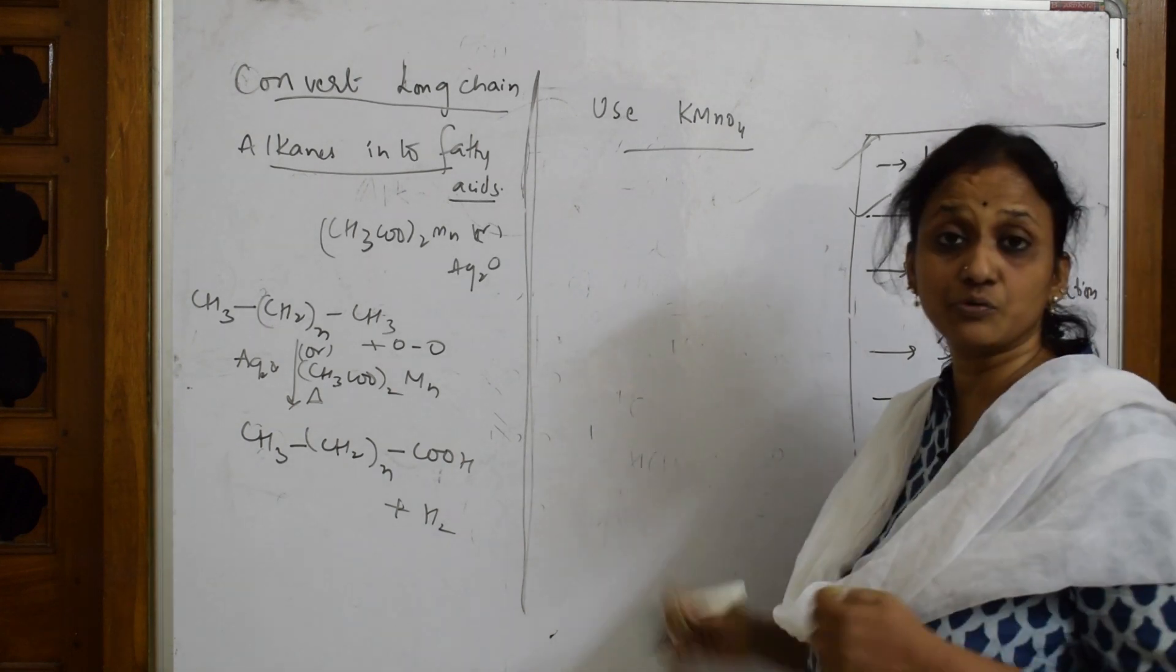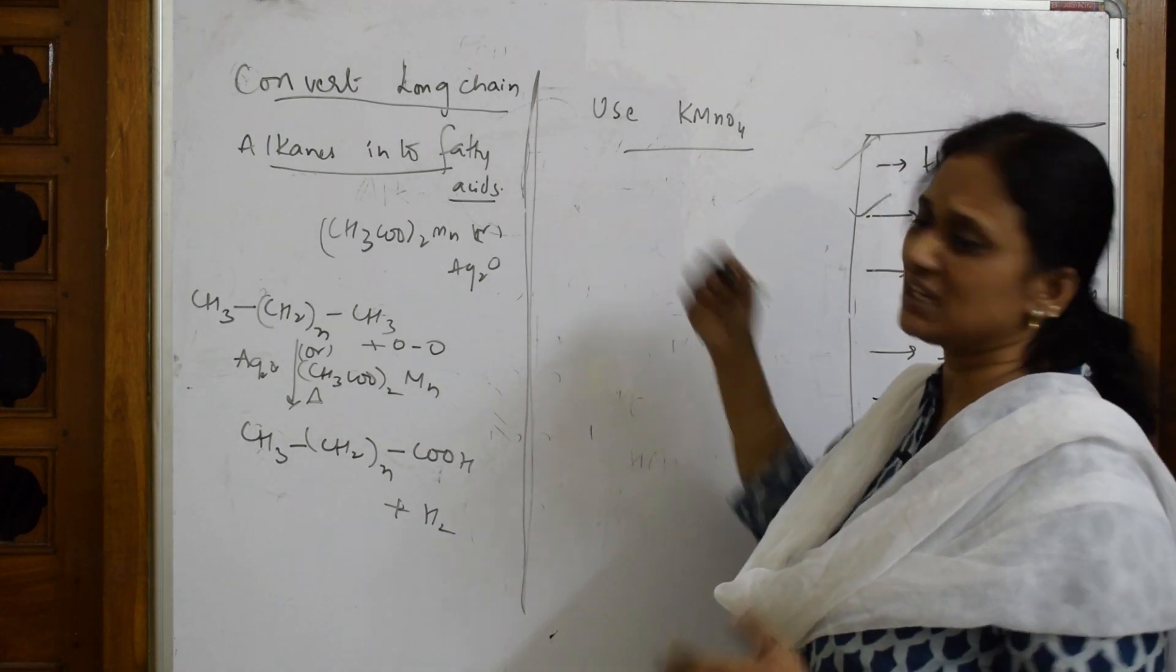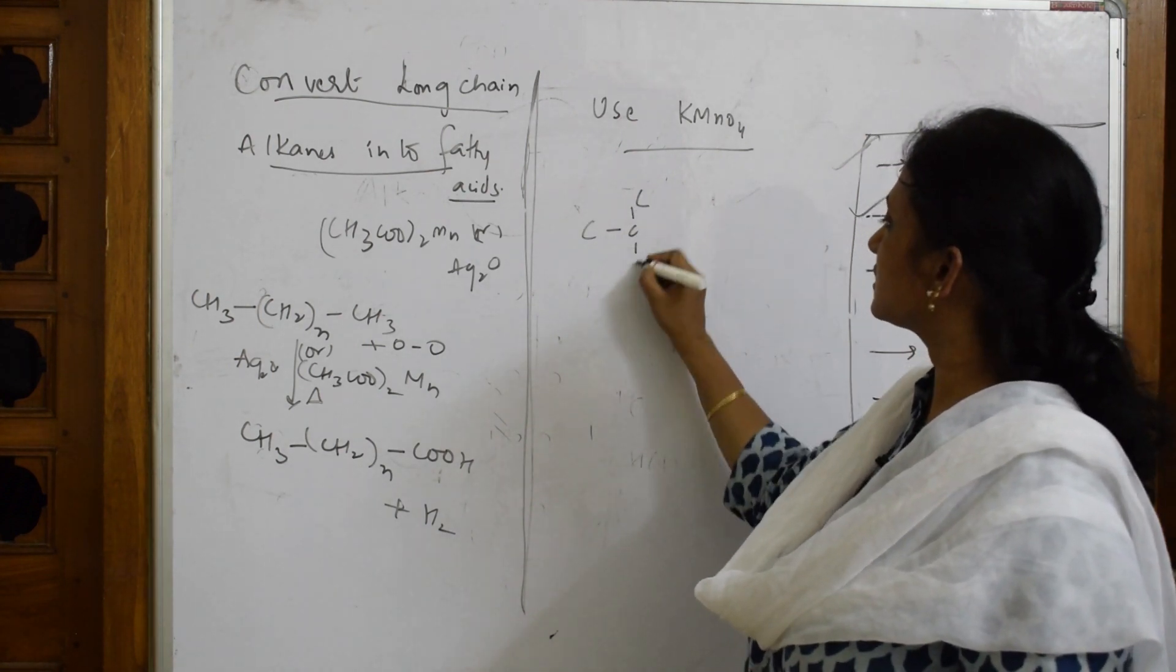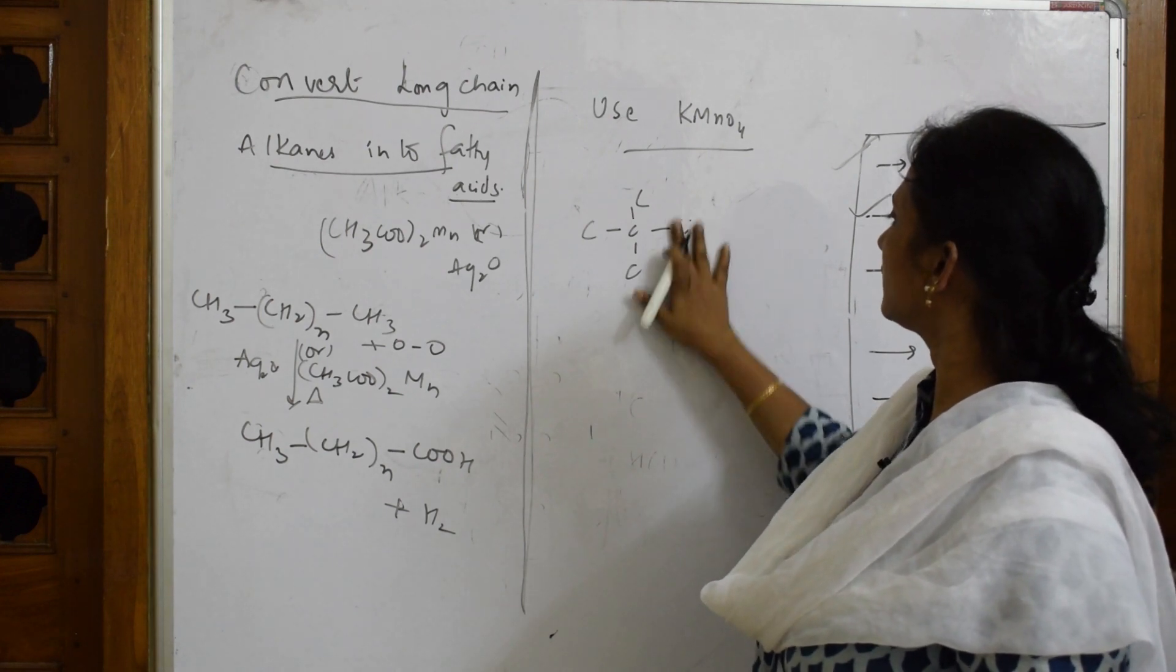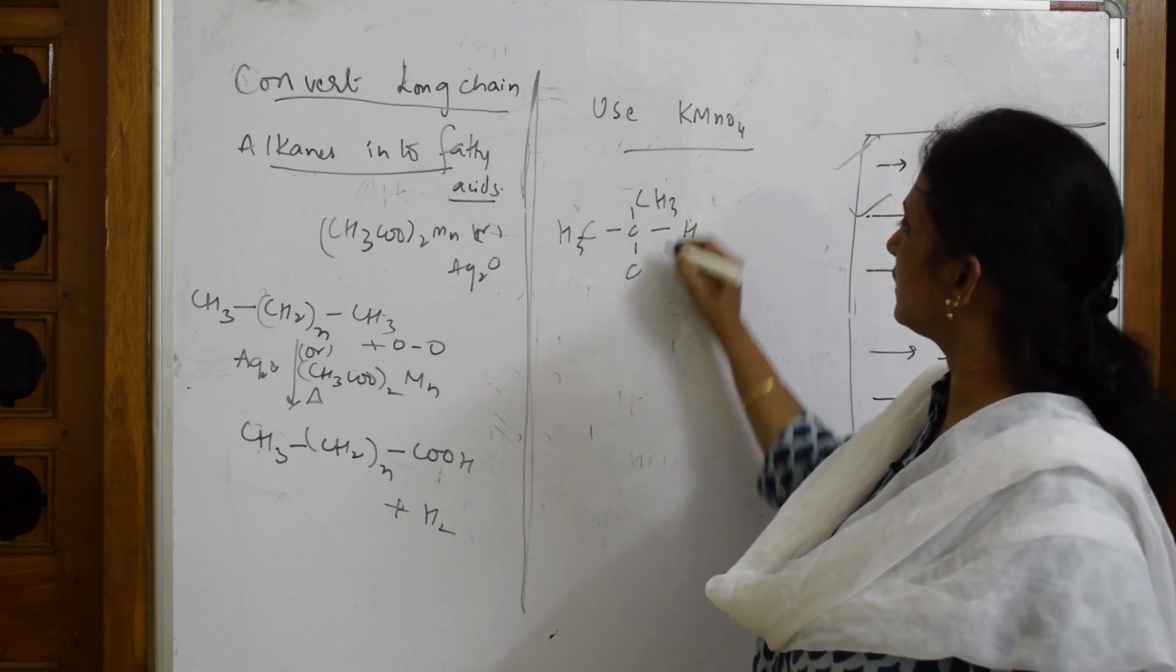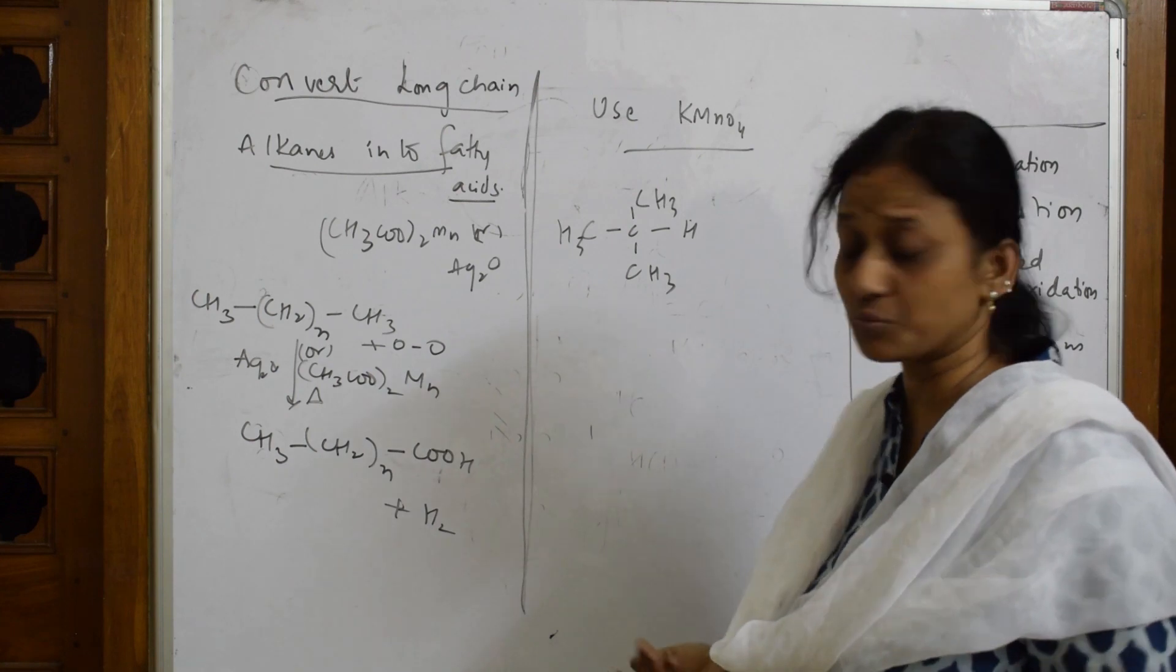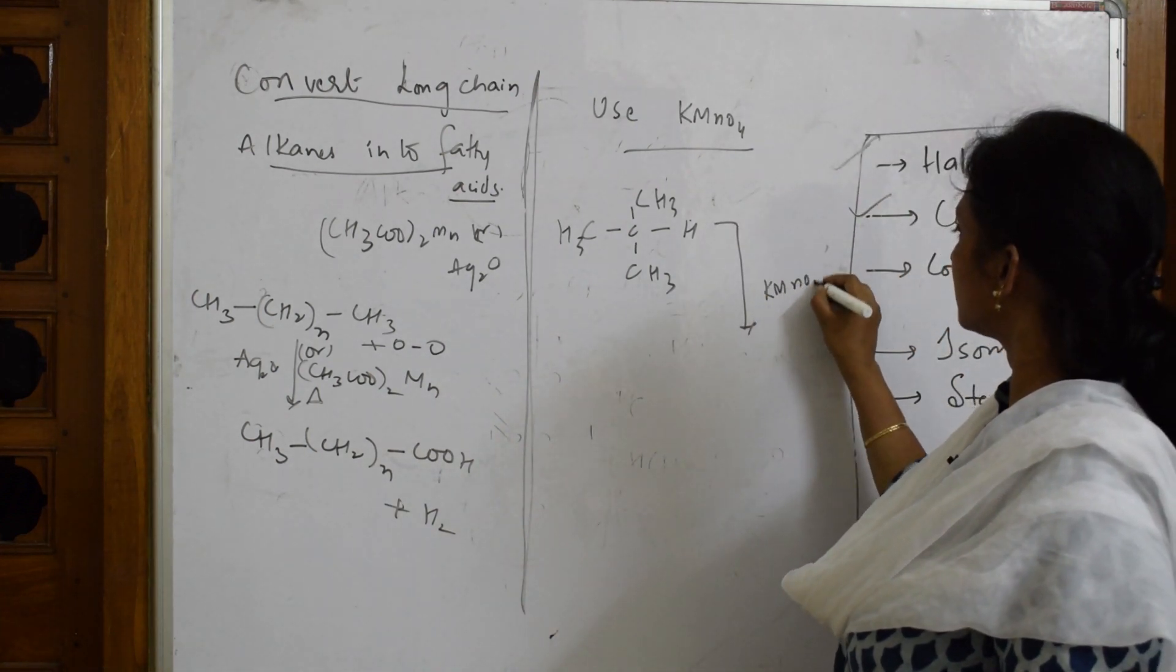Suppose if I take K-permanganate, it is an oxidizing agent. Here, you can take any example. Basically, I am taking this example which is a specific one. You can take any chain, extend the chain, not a problem.